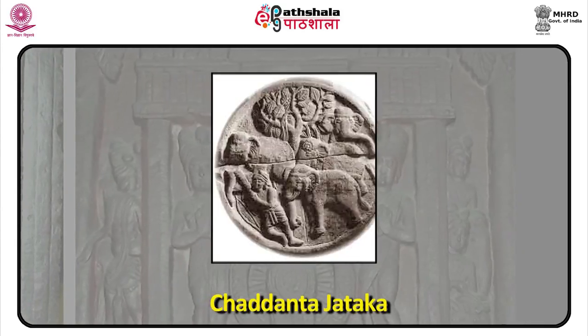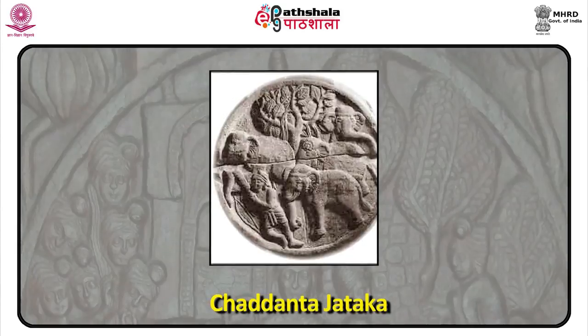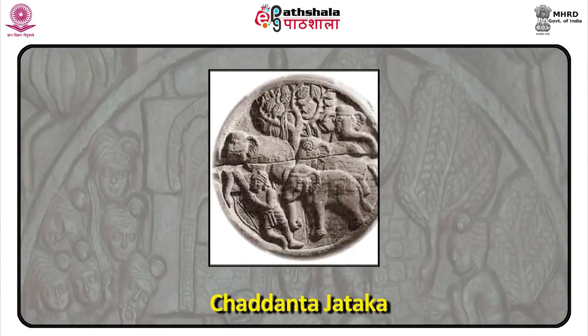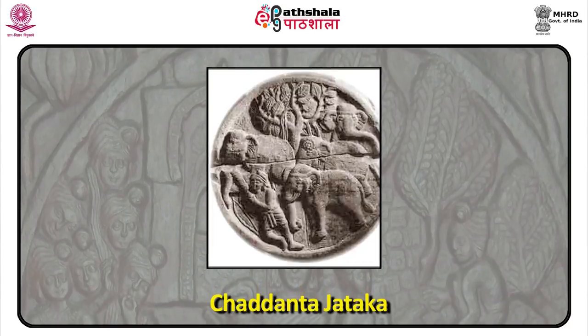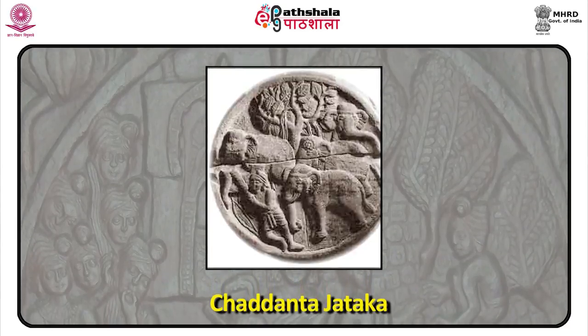The Vesantara Jataka is the story in which Bodhisattva is born as Prince Vesantara, who gives away everything that is asked of him. Eventually he ends up giving away the precious white elephant of his kingdom, which is responsible for bringing rains. He is banished to the forest for this by his father, and there he gives away his children and wife as well.